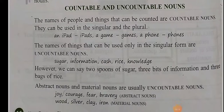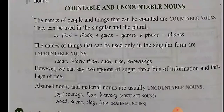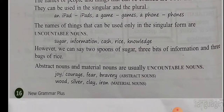The names of people and things that can be counted are countable nouns. They can be used in singular and the plural. For example, an iPad, iPads; a game, games; a phone, phones, etc. The names of things that can be used only in singular form are uncountable nouns. For example, sugar, information, gas, rice, knowledge, etc.